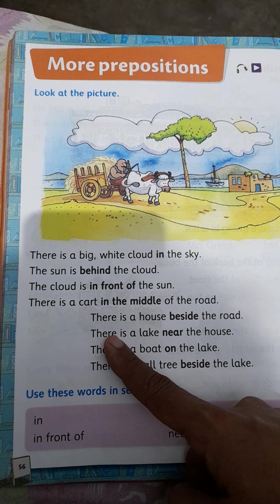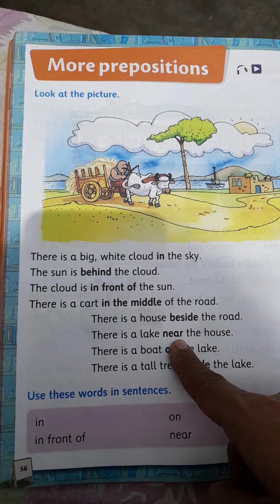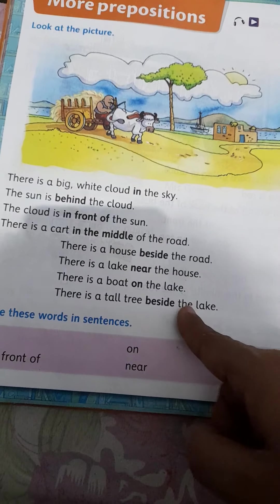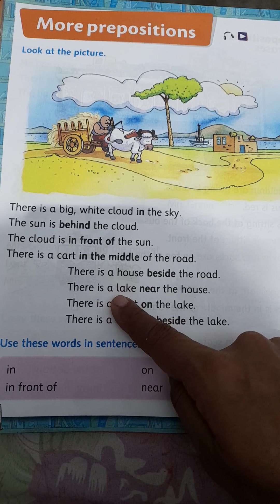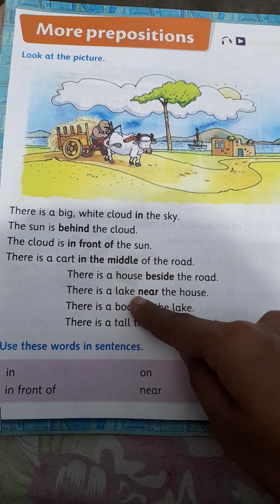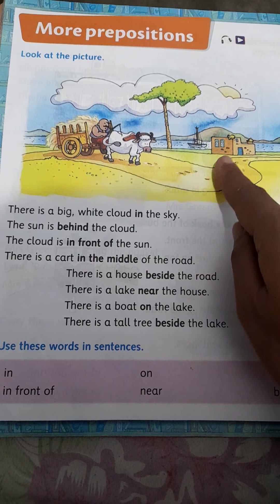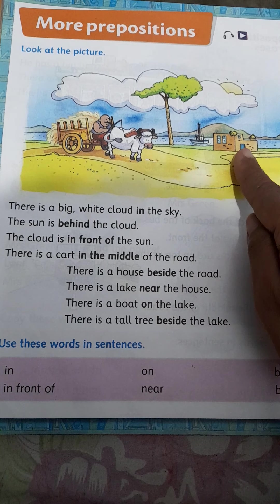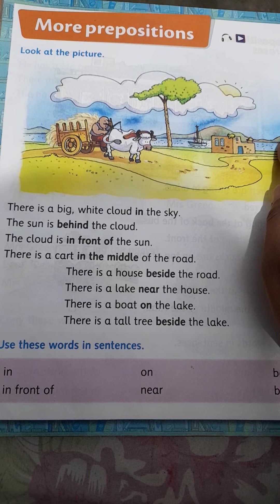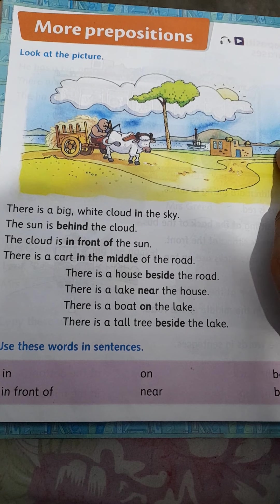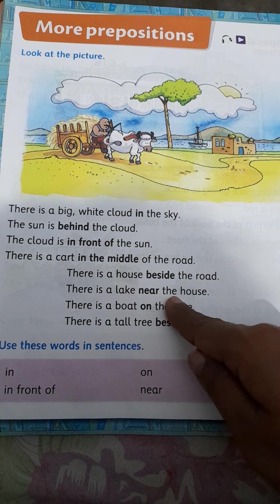T-H-E-R-E there, I-S is, a L-A-K-E lake, N-E-A-R near, T-H-E the, H-O-U-S-E house. Lake means jheel. Near means pass mein. There is a lake near the house. Is house ke pass mein lake hai. Ghur ke pass jheel hai.